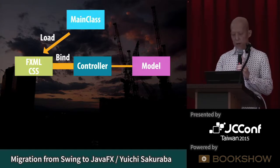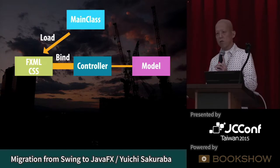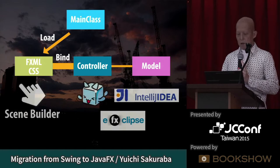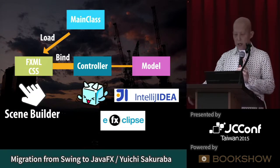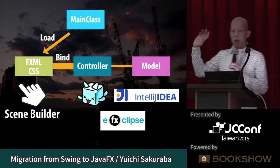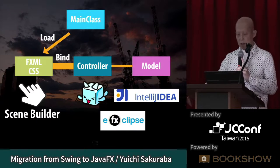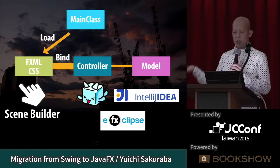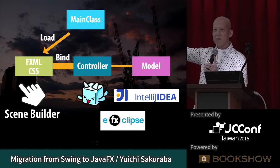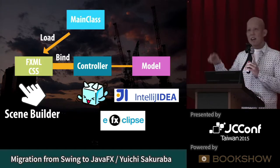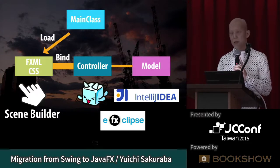When developing an application, FXML is graphical and CSS is also graphical, so we use Scene Builder, which is a graphical editor. The controller and model are built by Java, so we use an IDE: NetBeans, IntelliJ, or Eclipse. The last one is FXclipse — it's a plugin of Eclipse for JavaFX development.